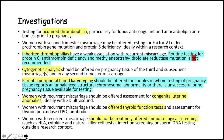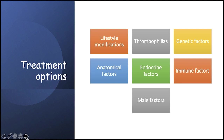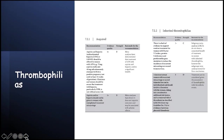Treatment options include lifestyle modification, thrombophilia treatment, genetic, anatomical, endocrinal, immunological, and male factor management. For acquired thrombophilia, aspirin 81 mg and low molecular weight heparin (or unfractionated heparin) — often enoxaparin — are given from a positive pregnancy test until around 34 weeks of gestation. Importantly, aspirin and heparin should not be given to women with unexplained recurrent miscarriages, as there is a lack of evidence to support their routine use.